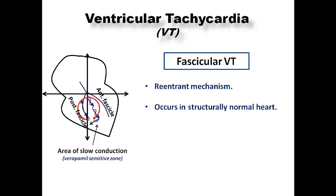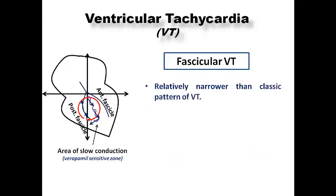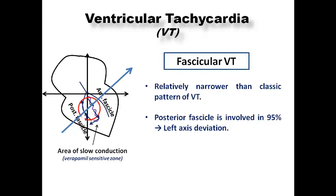Fascicular VT occurs in a structurally normal heart — normal echocardiography and cardiac MRI. It is more common in young males and shows typical RBBB morphology, which is one of the famous exceptions to the usual VT pattern. Because it originates within the His-Purkinje system it shows a typical RSR' pattern. It is also relatively narrower than classic VT. When the anterior fascicle is involved (~5% of cases) it shows right axis deviation instead of left axis deviation.